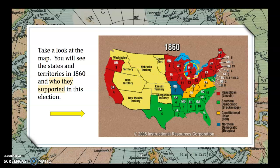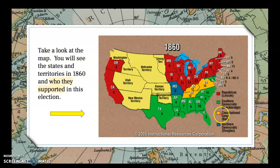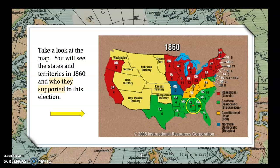Stephen A. Douglas of the Northern Democrats has very little support — just Missouri and a little bit of southern New Jersey. John Bell has the yellow states. John Breckinridge and the Southern Democrats sweep the whole South. But if you look at the electoral vote numbers, most Southern states have smaller totals than the northern states, and that's what helps Lincoln win the election.